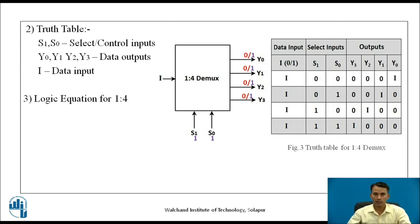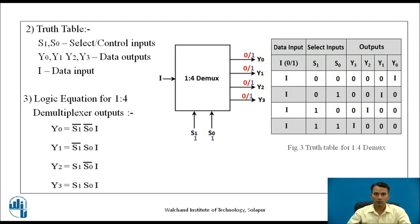In the next step we write logic equations for all the outputs of the 1-to-4 demultiplexer. The equation for Y0 is: Y0 = S1̄·S0̄·i. For Y1: Y1 = S1̄·S0·i. Similarly, Y2 = S1·S0̄·i, and Y3 is obtained when S1 and S0 are both 1, so Y3 = S1·S0·i.